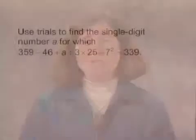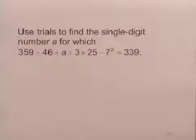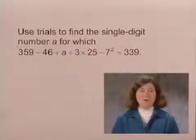For this question, we're asked to use trials to find the single-digit number A for which 359 minus 46 plus A divided by 3 times 25 minus 7 to the second power equals 339.